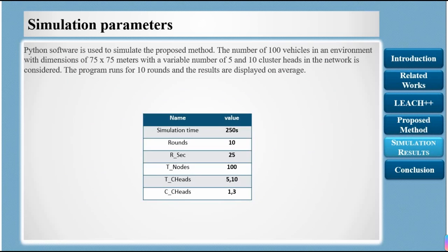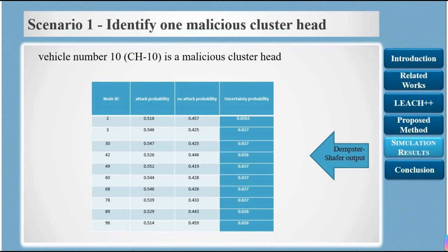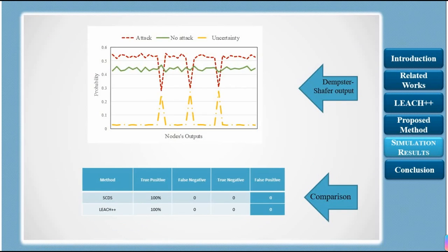The simulation uses 100 vehicles, 5 or 10 cluster heads, running for 10 rounds. In scenario 1, a network of 100 vehicles and 5 CHs is used, with only one malicious vehicle: CH 10. The Dempster-Shafer output shows that the probability of attack on CH 10 is higher than other probabilities, confirming the proposed method correctly identified the malicious node. Figure 1 shows the Dempster-Shafer output result for CH 10, which is most likely identified as malicious.